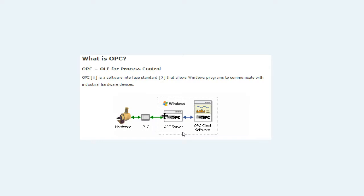Today we'll talk in a little more detail about the server — what servers are used — and a little bit on how to configure RSLinx. When you purchase a server, there are different providers. One example is Rockwell RSLinx, another is Kepware KepServer, and Matrikon also supplies OPC servers.